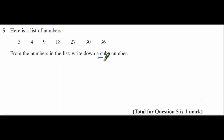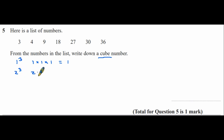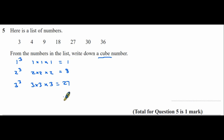In question five, we're given a list of numbers and asked to choose a cubed number — a number found by multiplying a smaller number by itself three times. One cubed is 1, not on the list. Two cubed is 8, not on the list. Three cubed is 3 times 3 times 3, which is 27. Therefore 27 is our answer.